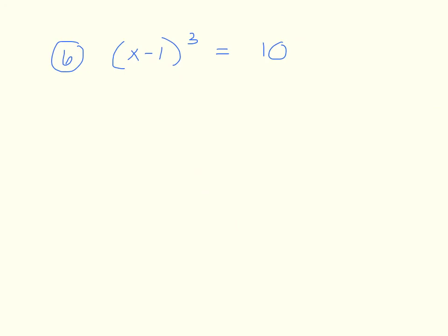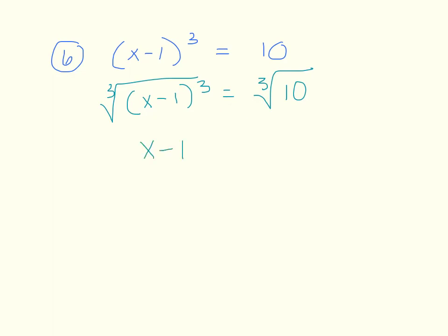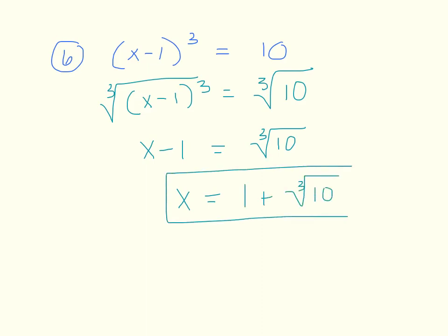For the last problem, (x minus 1) cubed equals 10. You don't need to expand — what's being taken to a power is already isolated, so just cube root both sides. Since the index is odd, no plus or minus is needed. Cube rooting (x minus 1) cubed gives x minus 1, and the cube root of 10 can't be simplified since there are no groups of 3. To isolate x, add 1: x equals 1 plus the cube root of 10. Your first homework assignment is based on this lecture — fractional exponents and roots other than 2.